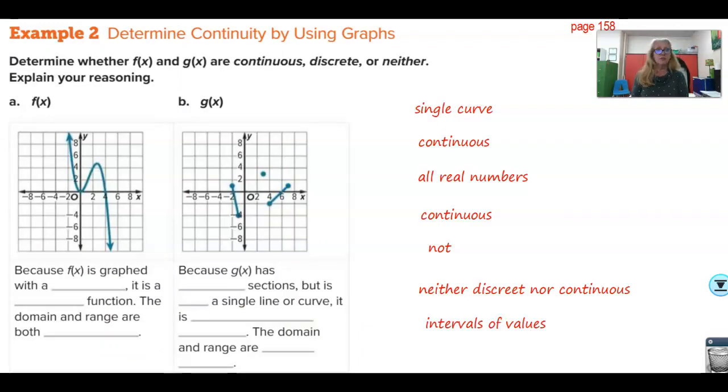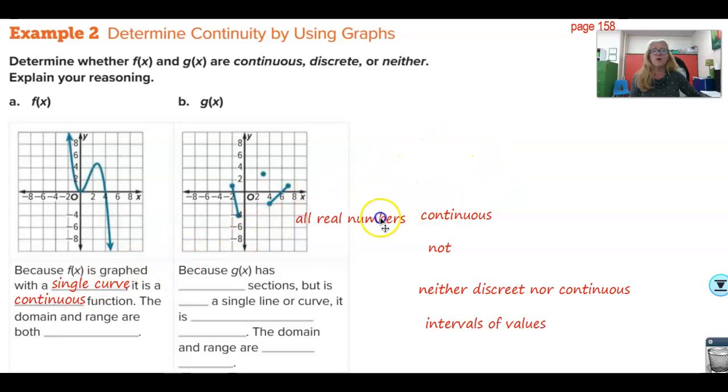Example two is on page 158. Determine whether f(x) and g(x) are continuous, discrete, or neither. A would be continuous, because all of the points are connected by a line. It doesn't matter that it's curvy. Because f(x) is graphed with a single curve, it is a continuous function. The domain and range are both all real numbers. That means that x is all real numbers, and y is all real numbers. And you know that this continues on because of the arrows.